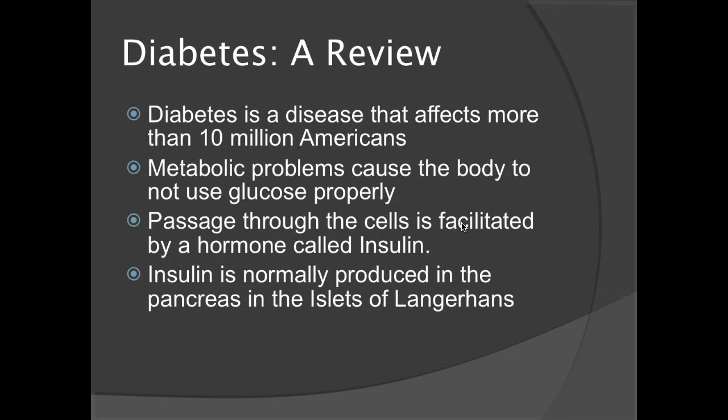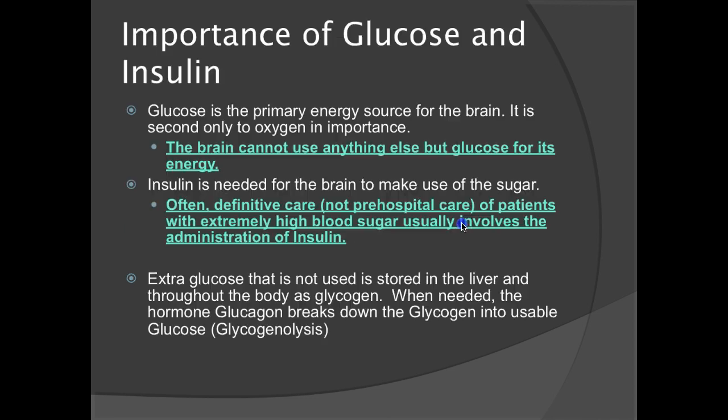A quick review about diabetes. It's a disease that affects more than 10 million Americans. Metabolic problems cause the body to not use glucose properly. Passage through the cells is facilitated by a hormone called insulin, normally produced in the pancreas and the islet of Langerhans. Glucose is the primary energy source for the brain, second only to oxygen in importance. The brain cannot use anything else but glucose for its energy.